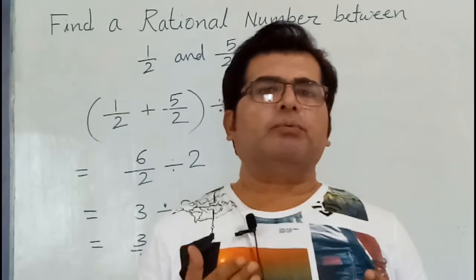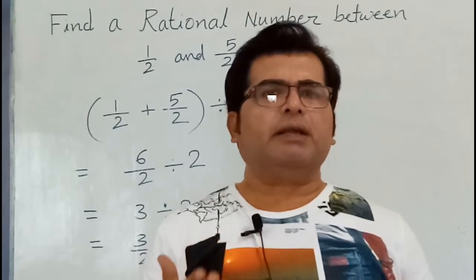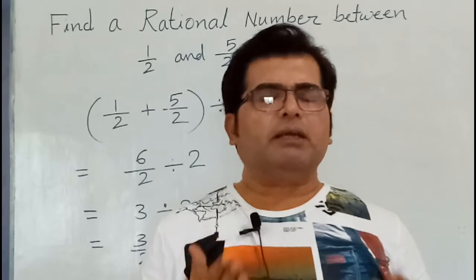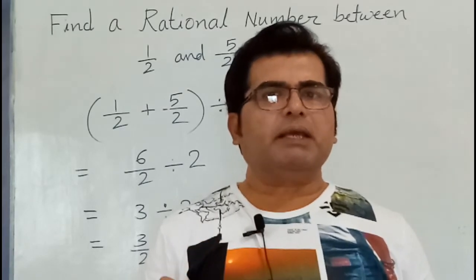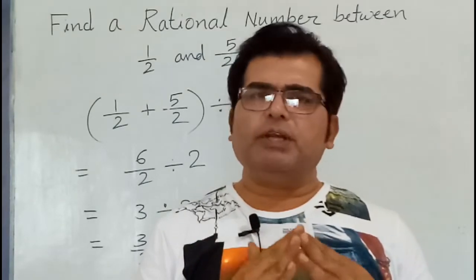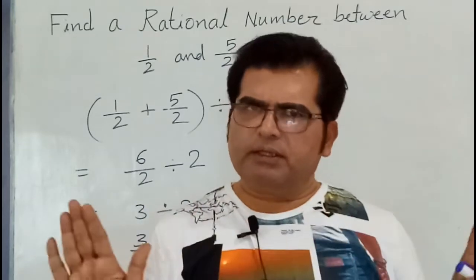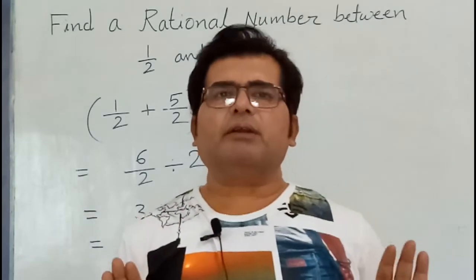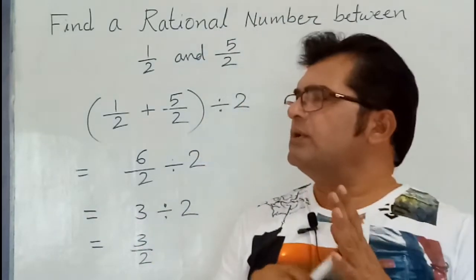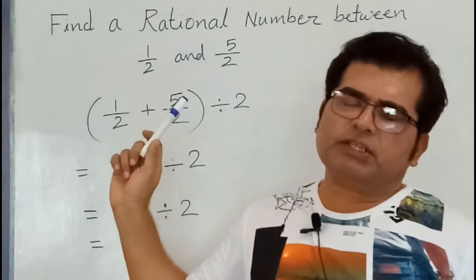Then you need not follow that method by taking LCM and making equal denominators and making bigger denominators. You need not do anything at all. Here you have to do just add both the rational numbers.